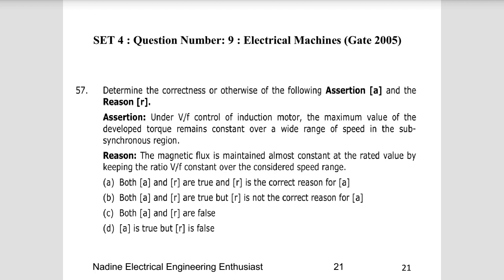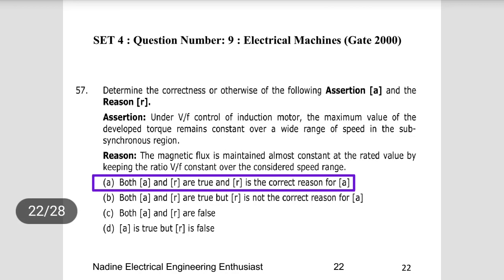Question 9: Under V/f control of an induction motor, the maximum value of developed torque remains constant over a wide range of speed in the sub-synchronous region. The reason is that the magnetic flux is maintained almost constant at rated value by keeping the V/f ratio constant over the considerable speed range. Both the assertion and the reason are true, and R is the correct explanation for A. Choice A is the right answer.